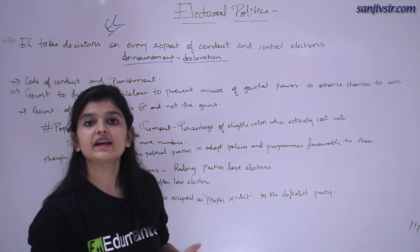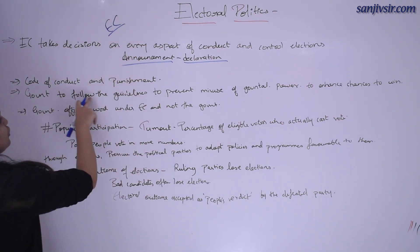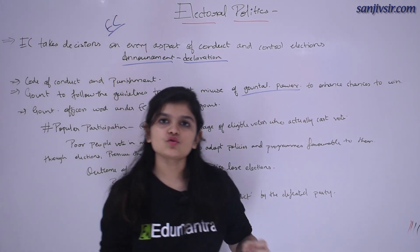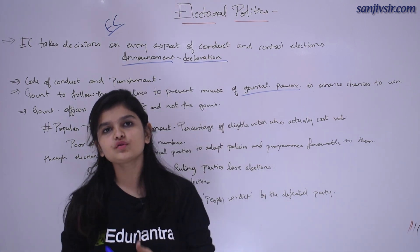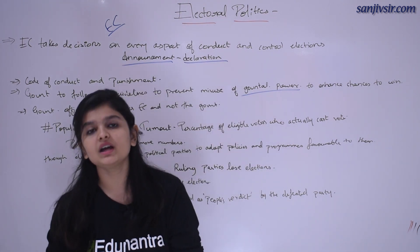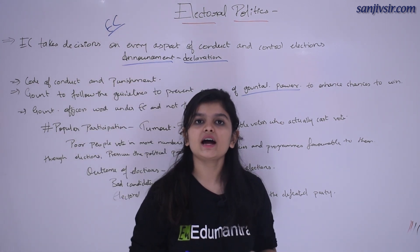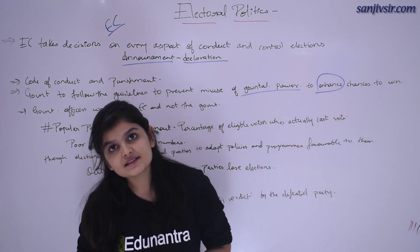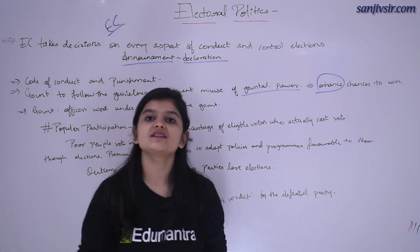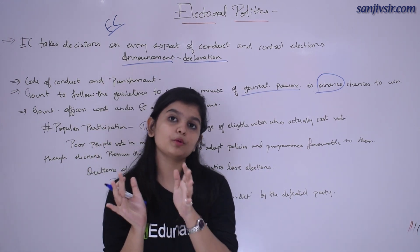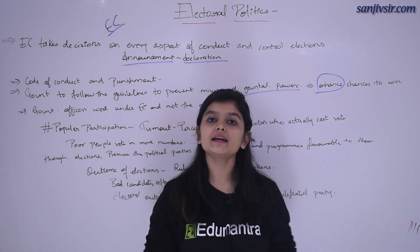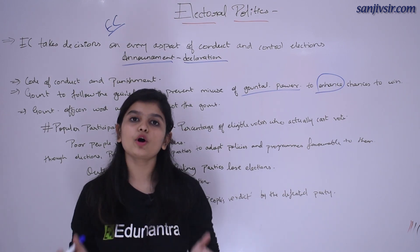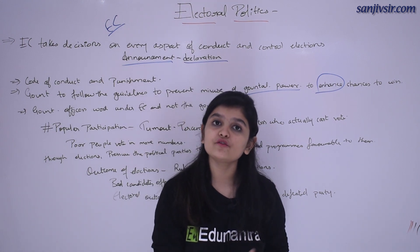Next: government को follow the guidelines to prevent the misuse of governmental power। That is, government का resources जो है वो misuse नहीं होना चाहिए — उनका ज़्यादा use भी नहीं होना चाहिए election के purpose में। क्योंकि अगर कोई candidate government resources का use करता है तो उसका जीतने का chance enhance हो जाता है, जो गलत है — क्योंकि government resources उसकी private property नहीं है, that belongs to the nation and no property of nation can be used by any candidate for his personal purposes.